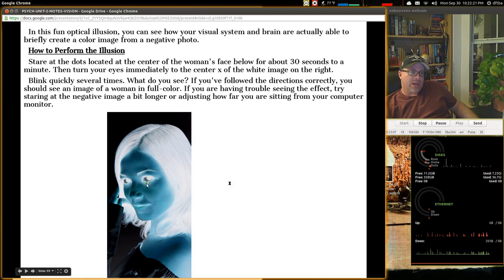You stare directly at the red, yellow, and green dot right below her left eye for about 30 seconds to a minute. Then, you don't have to go to the next screen. You will immediately turn to the X on the right of the white image on the right. You'll blink a few quick times, a few several times, and what will you see? Well, let's go ahead and try it out and let's see what you see. Pause it. 30 seconds on her. Look at the three dots. And then look at the X afterwards. Go.